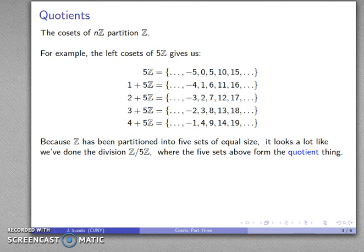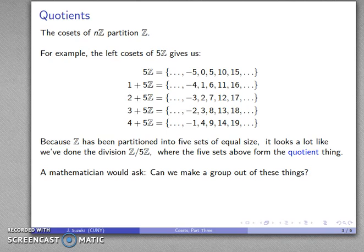But it is very similar to what we consider to be a regular quotient. Now, no surprise, as this is an abstract algebra course, the question that we do want to ask is, can I make a group out of these things? So I have a bunch of things here. How can I make these into a group?